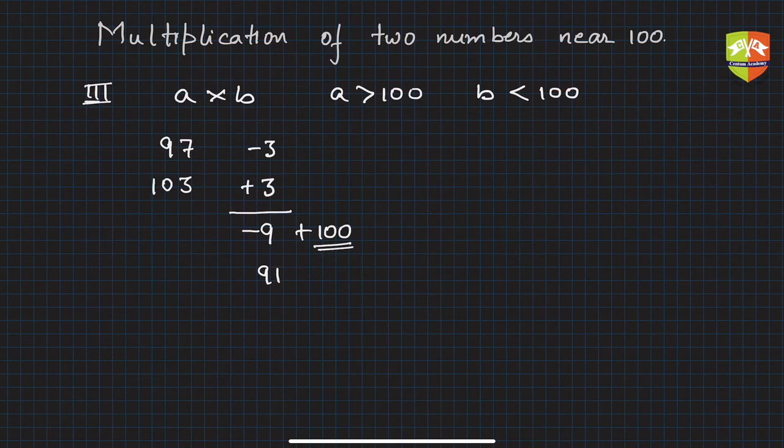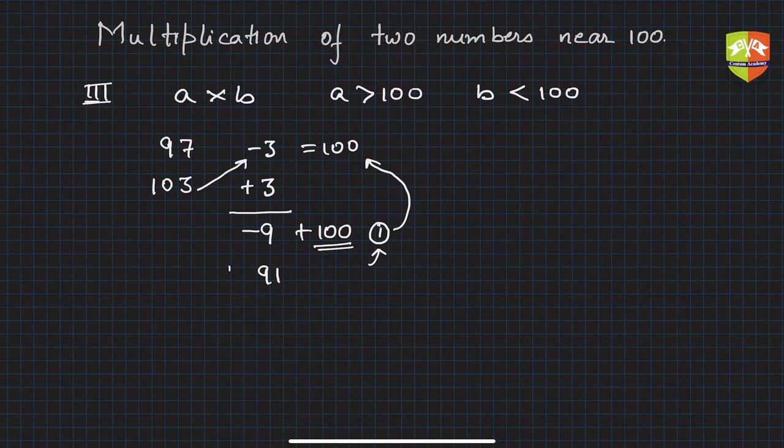How many hundreds did you add? Just keep count—you added 100, so write 1 here. Now repeat the process: 103 minus 3 is 100, but since you took 100 out, you have to reduce it. The sum is 100, so subtract this 1: 100 minus 1 is 99. So the product is 9991.